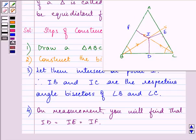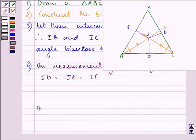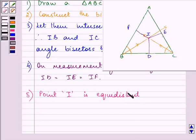Lastly, point I is equidistant from the sides of triangle ABC. This completes the question. Hope you enjoyed it. Bye for now, take care.